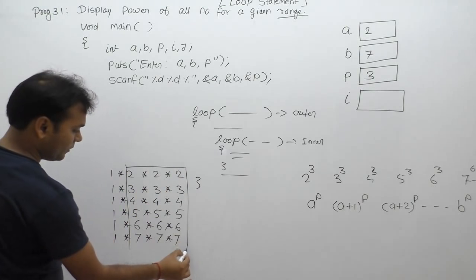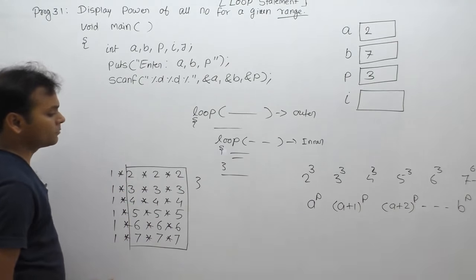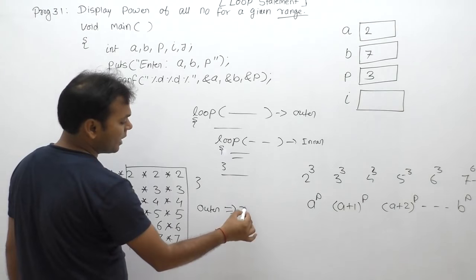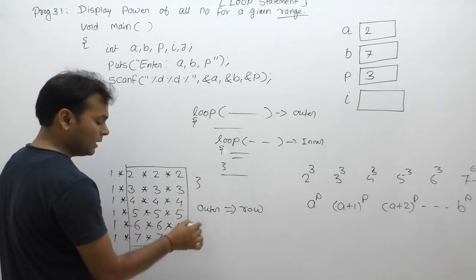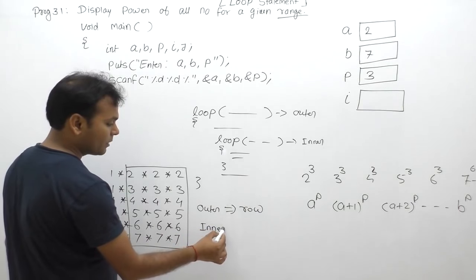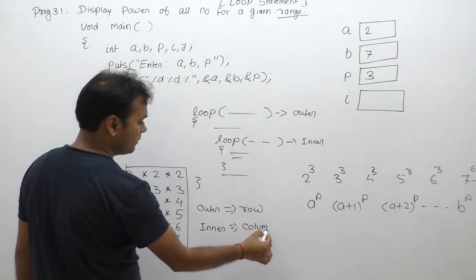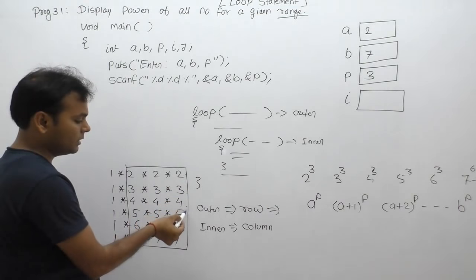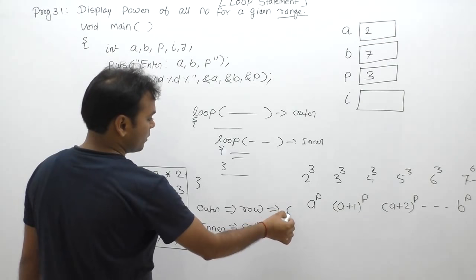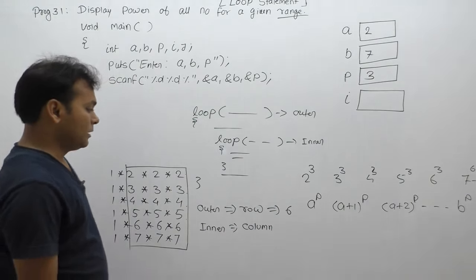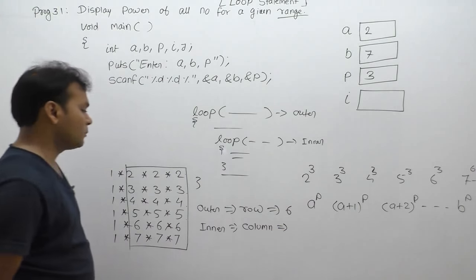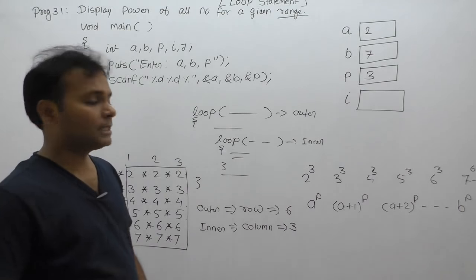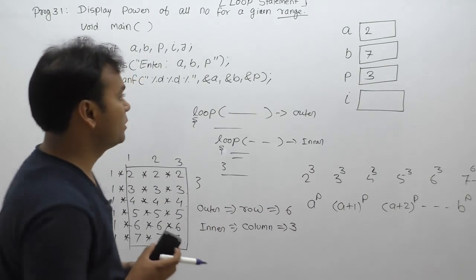The output is displayed in the form of rows and columns. The outer loop always manages the number of required rows, so the outer loop depends on the number of rows. The inner loop iterates based on the number of columns. In our case, the number of rows — for a range from 2 to 7 — is six. So the outer loop runs six times, and the inner loop runs based on the number of columns, which equals the power P (e.g., three columns for P=3).